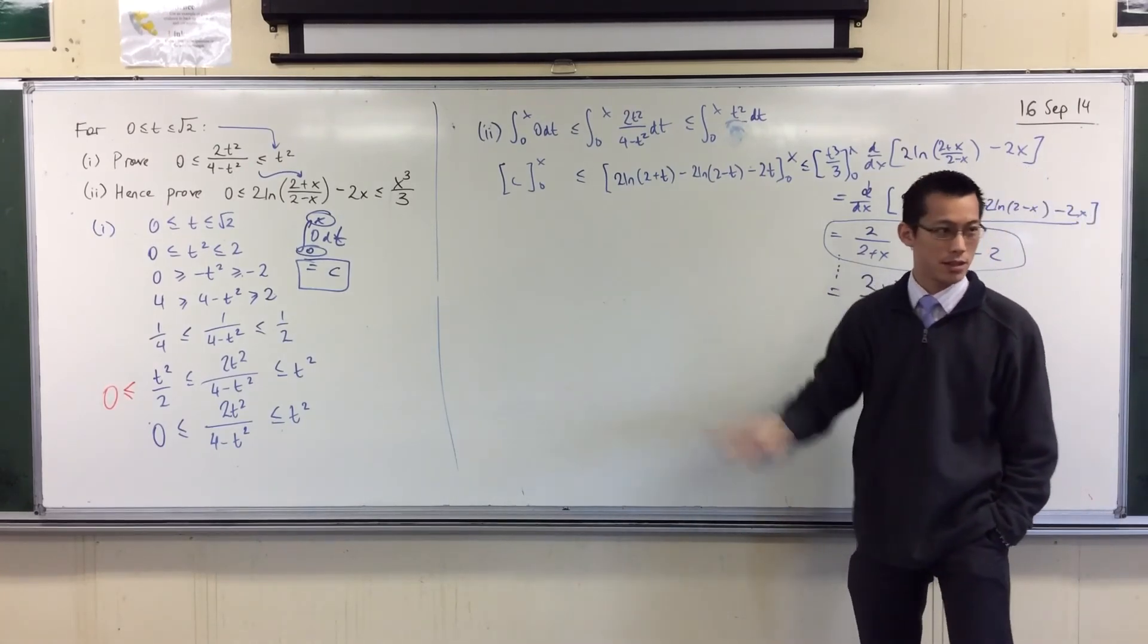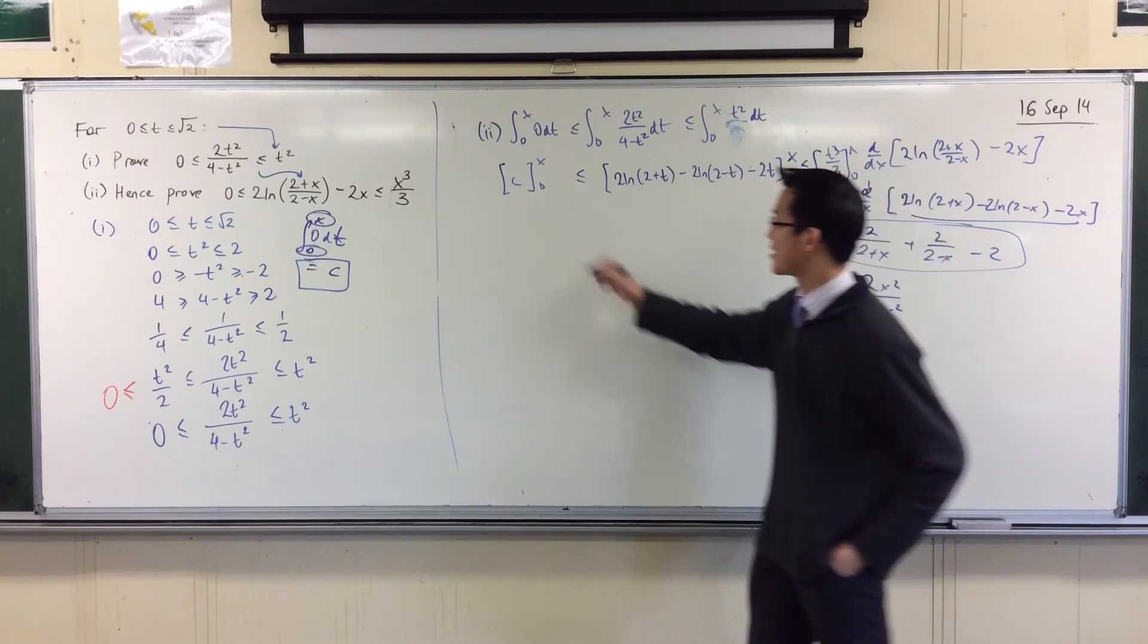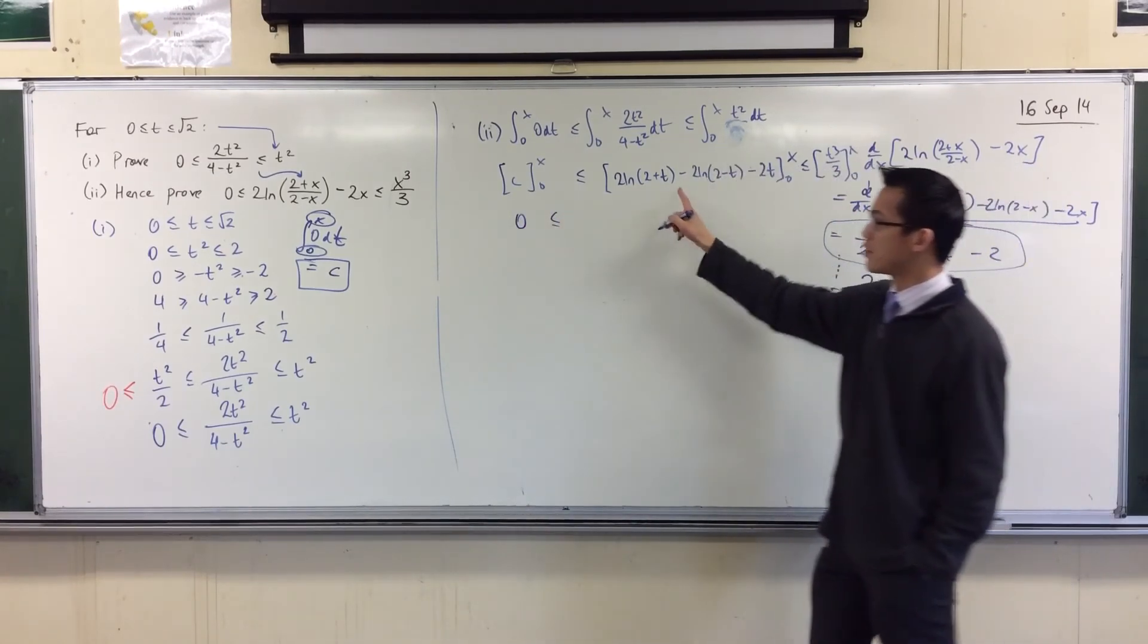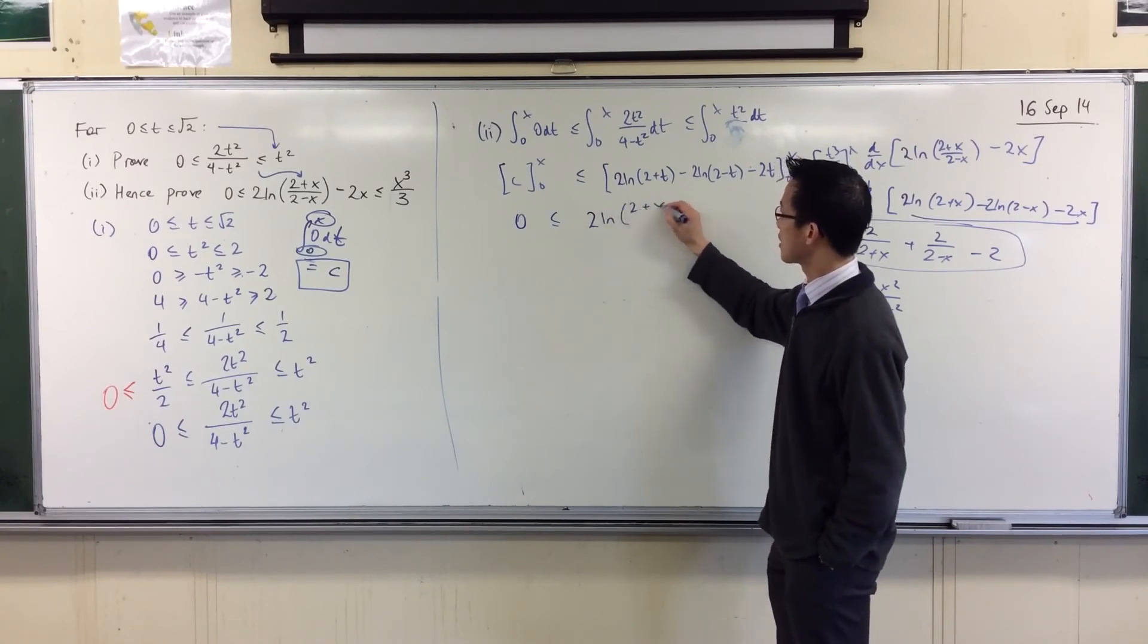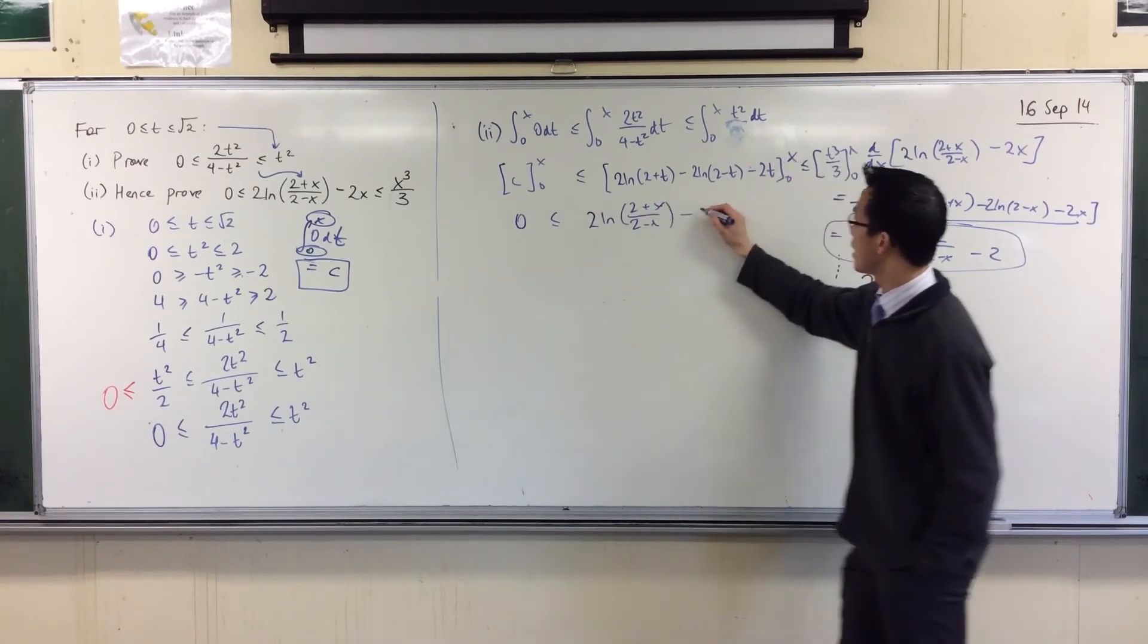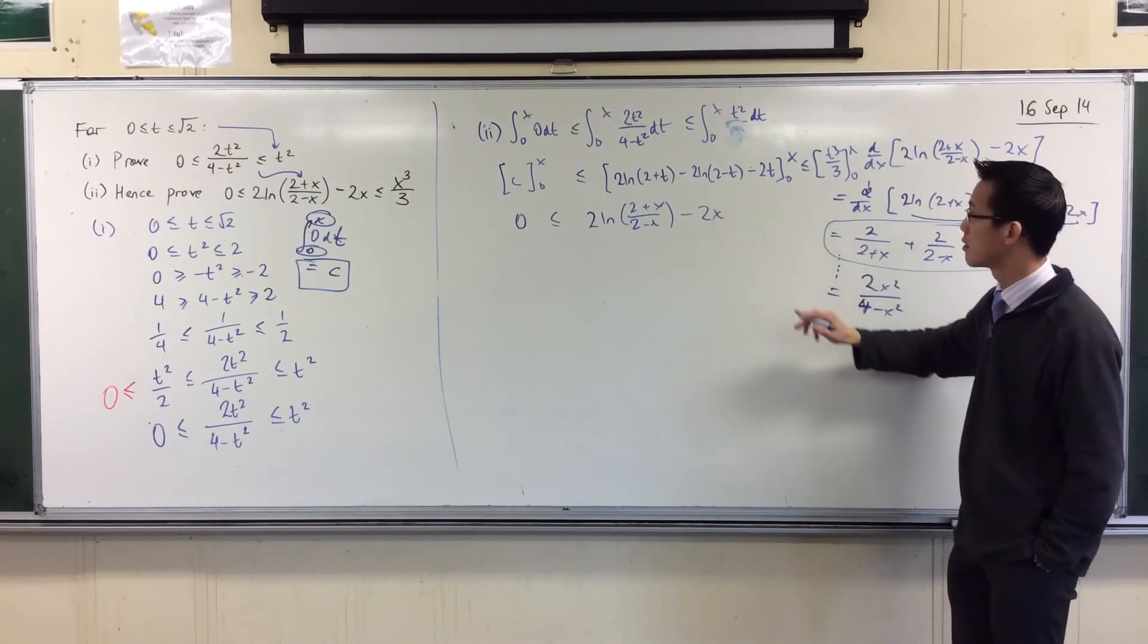But eventually, it will be nice and neat. You'll get your 0 over here. You'll get your, where am I trying to go? Um, you'll get these guys. 2 plus x on 2 minus x. And this t will become an x. You don't have to worry about the 0 boundary, it will disappear. Right? By the way, if you're wondering, yeah?